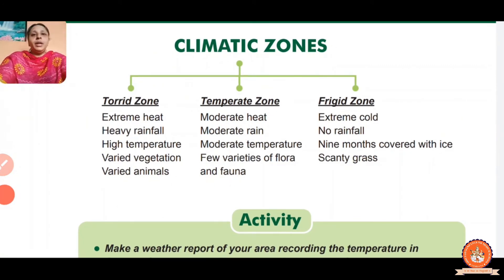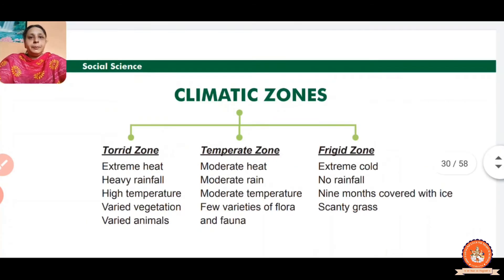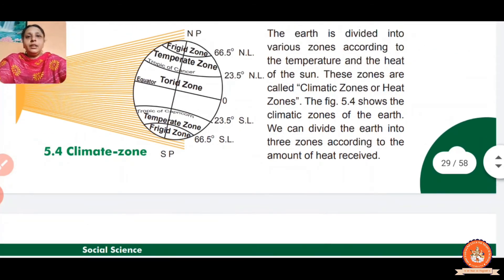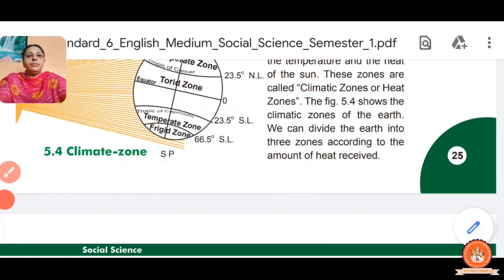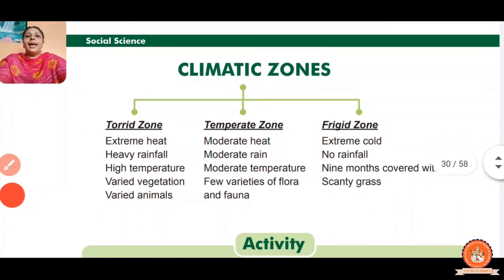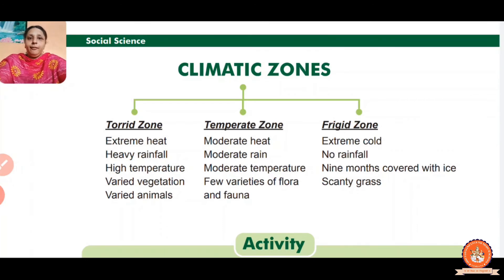The three climatic zones are: first, the Torrid Zone — the middle part — which has extreme heat, heavy rainfall, high temperature, varied vegetation, and varied animals.